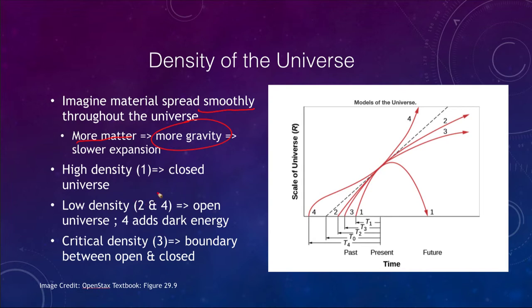We can have what we call a closed universe. This is a high density universe where the universe expanded, reached a peak, and then started to collapse. That is a closed universe because there will eventually be an ending to the universe. We have a start at the Big Bang and could have a Big Crunch later on.